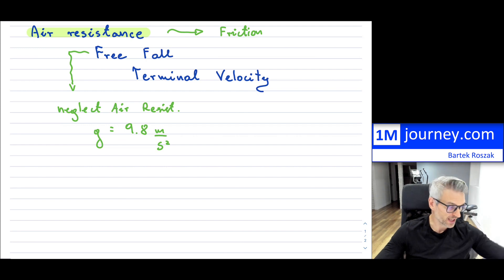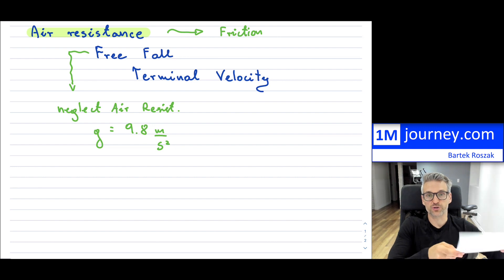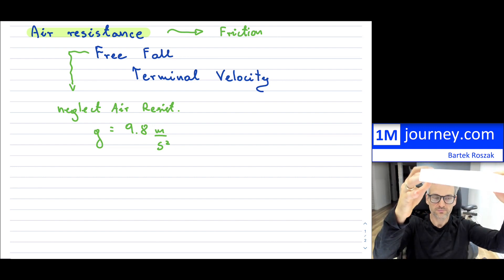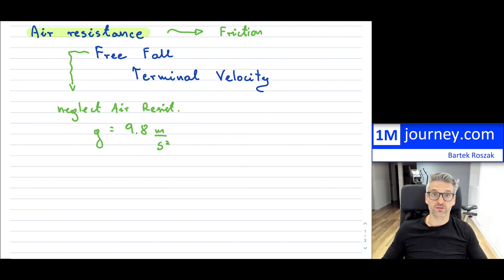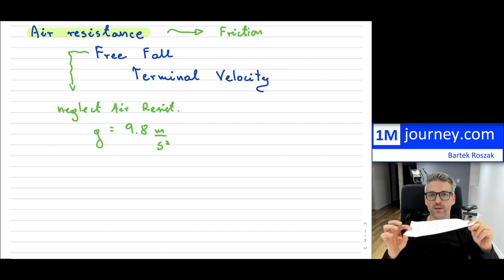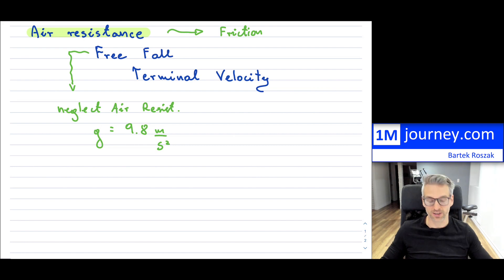If I take this random piece of paper and drop it, you can see that it has fallen, but it certainly has not fallen 10 meters every single second. There's a reason for that — because there's air resistance, and also the actual shape of the paper and of every single object that we consider.